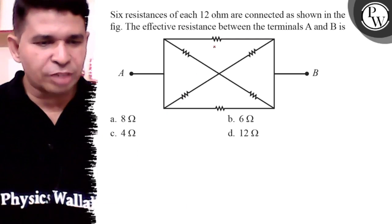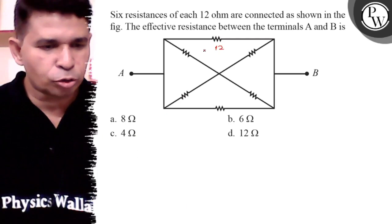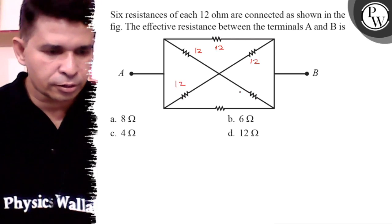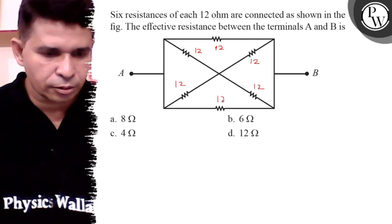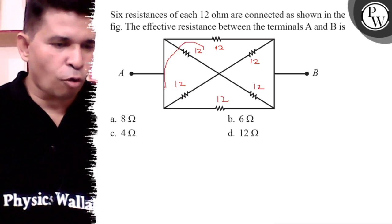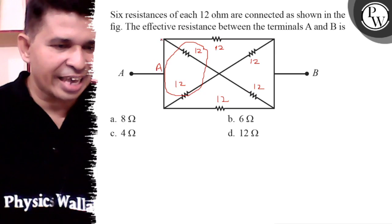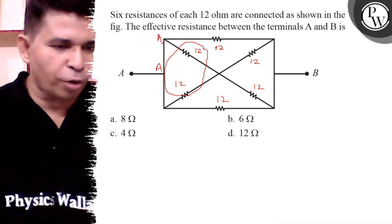All have 12 ohm, so 12, 12, 12. Now these two 12 ohm resistors are in parallel because this is point A - all points have equal potential, these are short circuit points. So between A and C, these 12, 12 are in parallel.